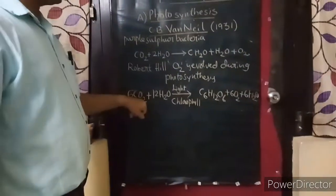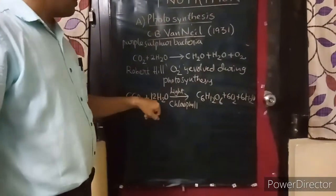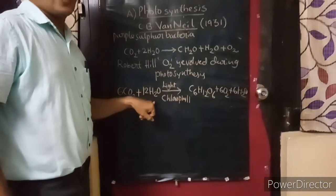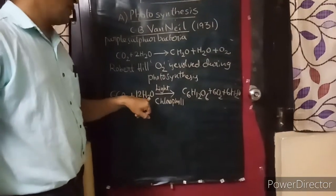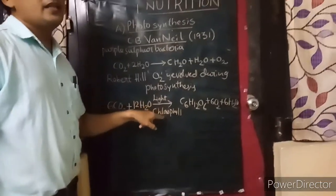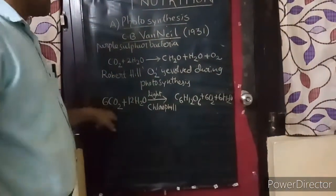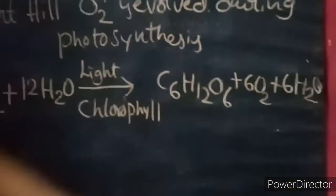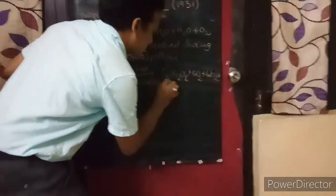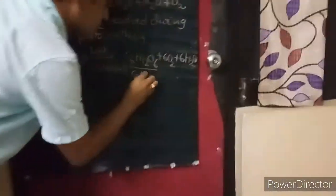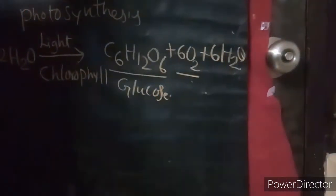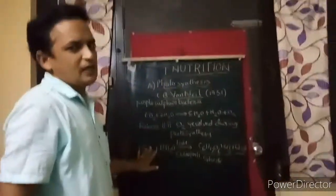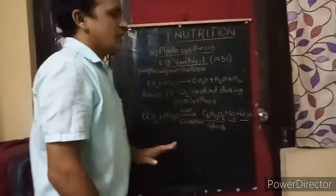In this equation, 6CO2 means six molecules of carbon dioxide, and 12H2O means 12 molecules of water. In the presence of light, the entire process occurs in the chlorophyll molecule. The product C6H12O6 is glucose — the basic product of photosynthesis — along with oxygen and water.